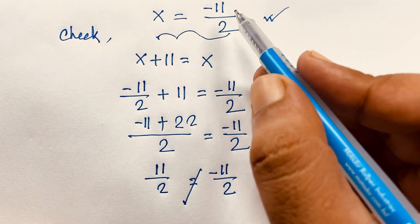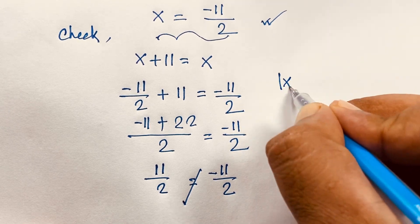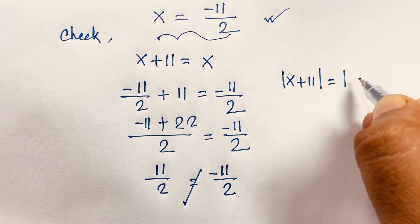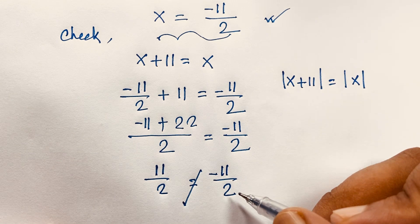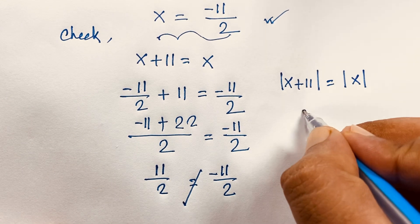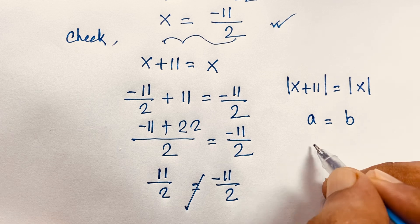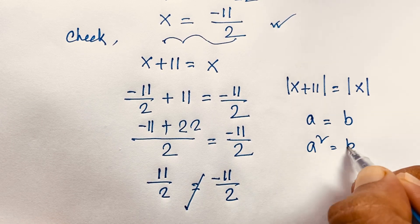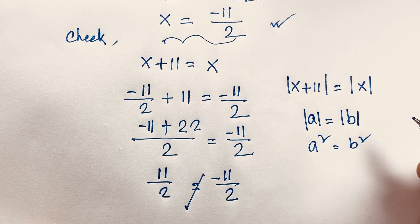So x is equal to minus 11 over 2 will be right when x plus 11 is an absolute value. You can see this is equal. You know that if a is equal to b, it will be a squared is equal to b squared — this is when a and b are absolute values.